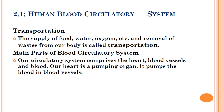Let's study the main parts of our blood circulatory system. Our circulatory system comprises of heart, blood vessels, and blood. Our heart is a pumping organ. It pumps the blood to every part of our body, and that blood moves through blood vessels.